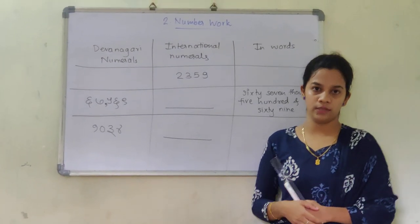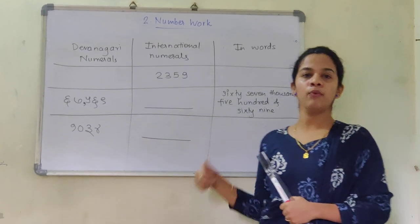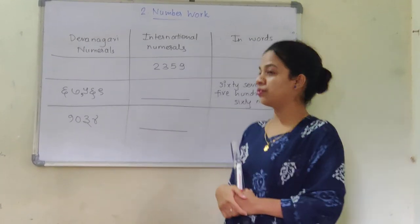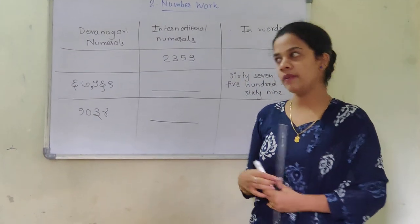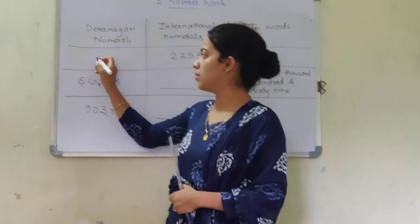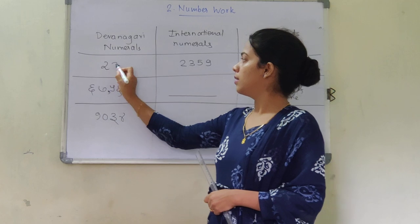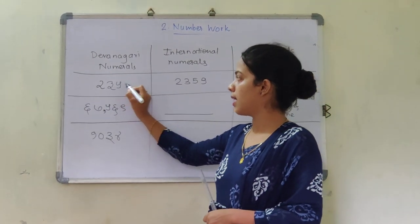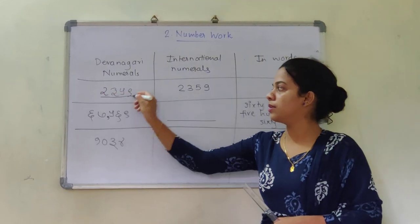Just help me out to solve this. The digits are 2, 3, 5, 9. How am I going to read this number? I am going to read this number as 2359. How am I going to write it in Marathi? How is 2 written in Marathi? It is written like this. How is 3 written? Like this. How is 5 written? 5 is written like this, and 9 is written like this. So in Dev Nagari we are going to use these.